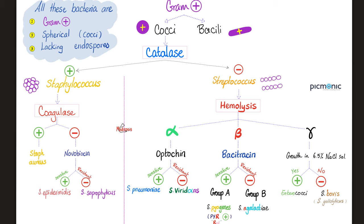If it caused partial hemolysis, look at the next question. Optocin is an antibiotic — can optocin kill you? Yes, it can. If sensitive to optocin, you are Streptococcus pneumoniae. If resistant to optocin, you are Streptococcus viridans. If beta hemolytic — complete hemolysis — the next question involves bacitracin. Killed by bacitracin? You are Group A beta-hemolytic streptococcus, such as Streptococcus pyogenes.